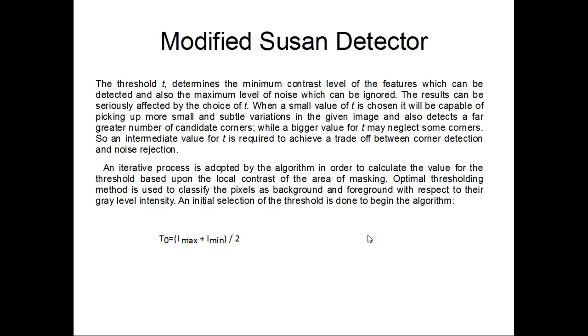Let's take a look at the modified Susan detector now. Here we have the threshold T which determines the minimum contrast value of the features which can be detected and also the maximum level of noise which can be ignored. The results can be seriously affected by the choice of T. When a small value of T is chosen, it will be capable of picking up more small and subtle variations in the given image and also detects a far greater number of candidate corners, while a bigger value for T may neglect some corners. An intermediate value for T is required to achieve a trade-off between corner detection and noise rejection.